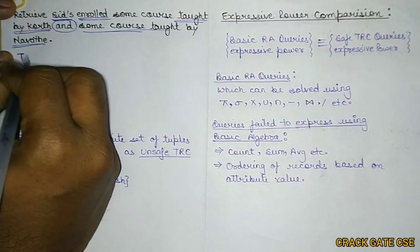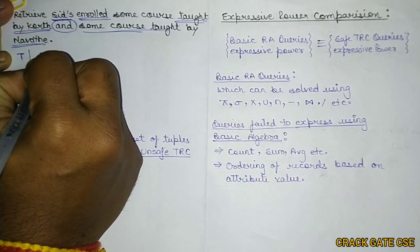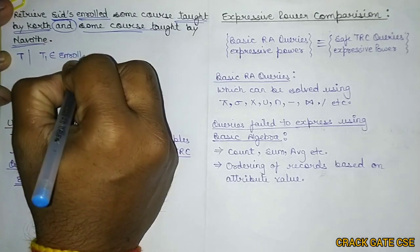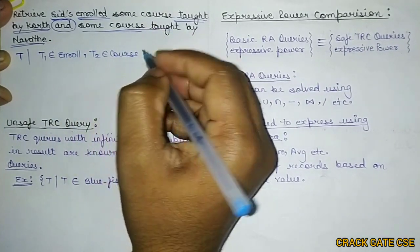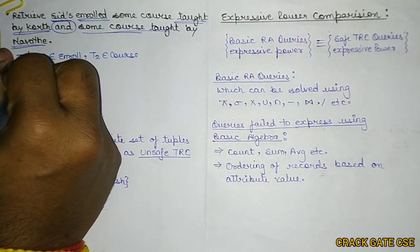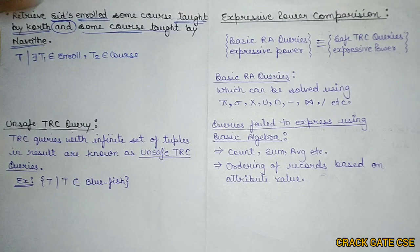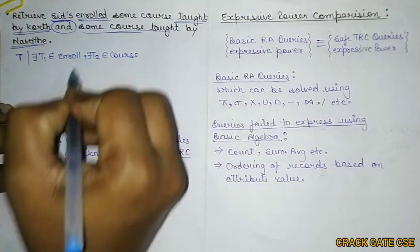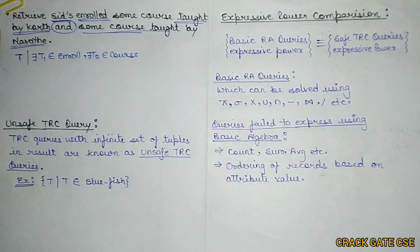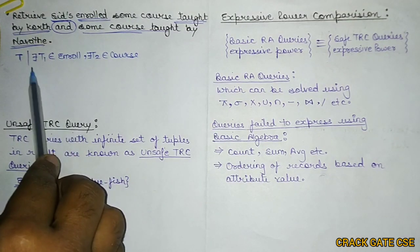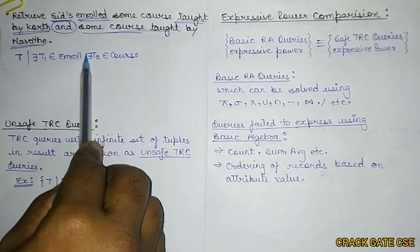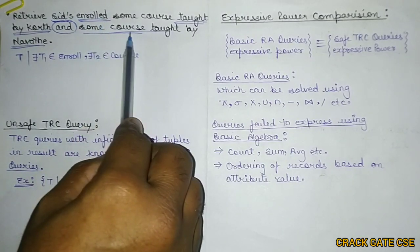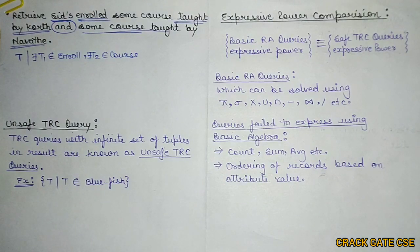T is the set of results. Then, instead of writing T1 and T2 directly, I write: there exists some T1 which belongs to Enroll, and there exists some T2 which belongs to Course. The meaning of 'there exists' is that not all conditions need to be satisfied universally — whatever the T1 value I am taking, there exists a T1 value in Enroll. And there exists some T2 value which belongs to the Course table. Now I write the equality condition for the join: T1 dot CID has to be equal to T2 dot CID.